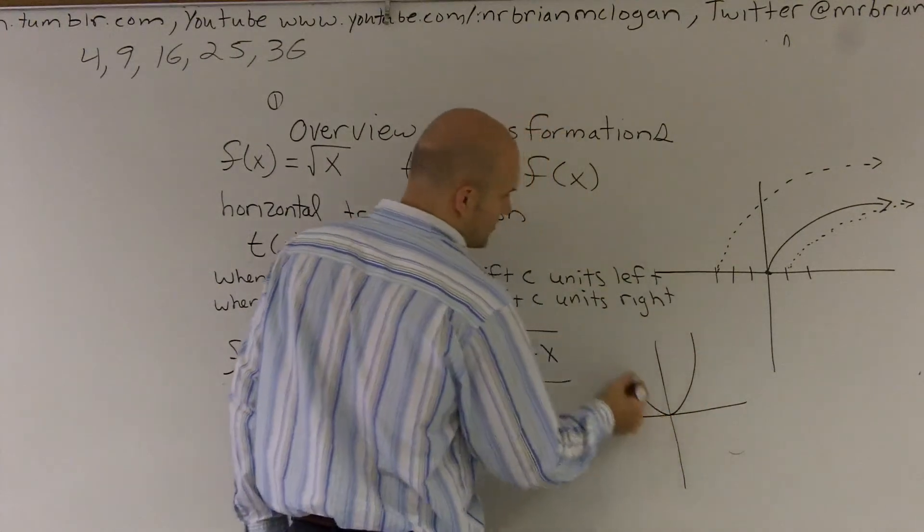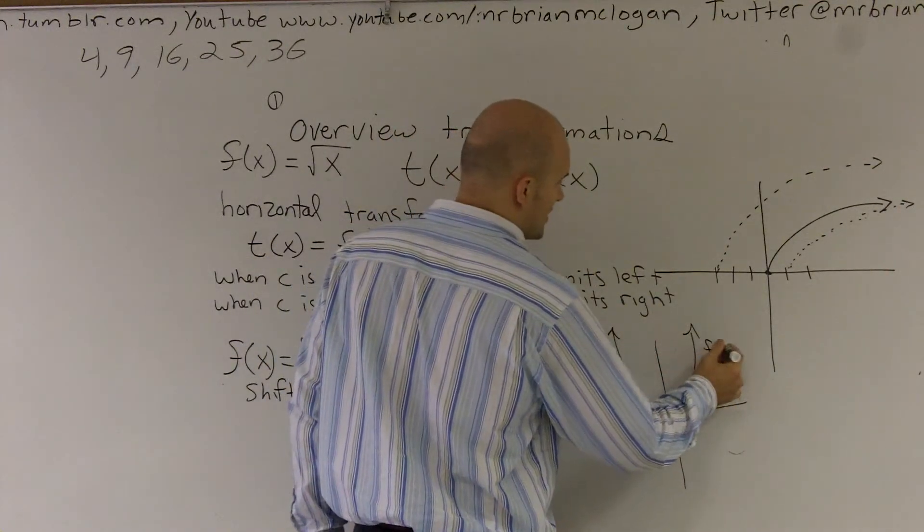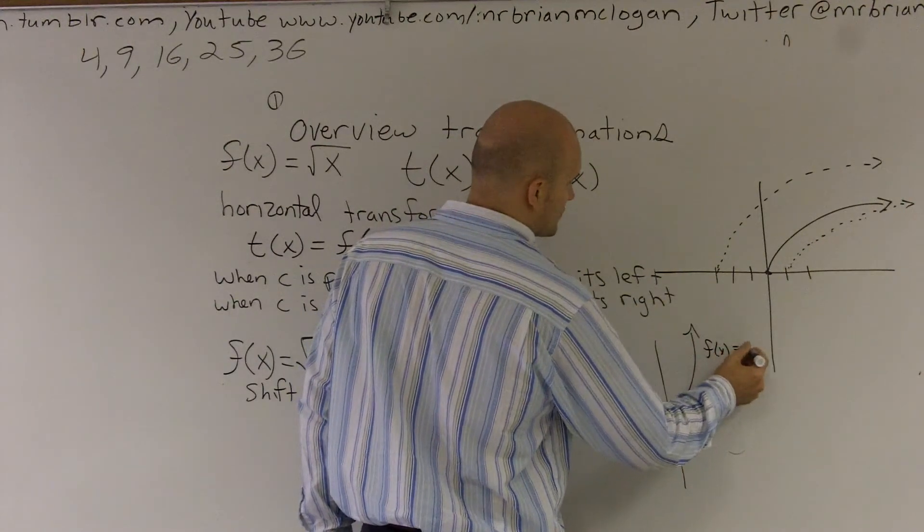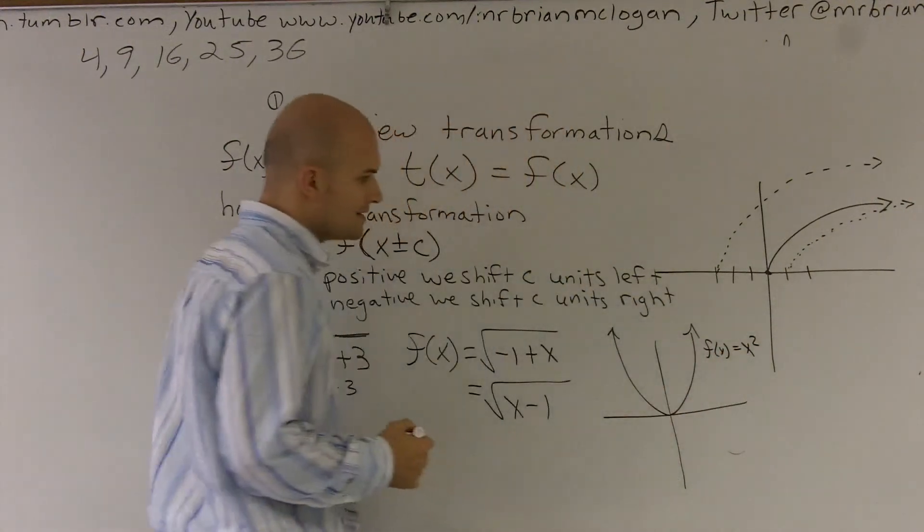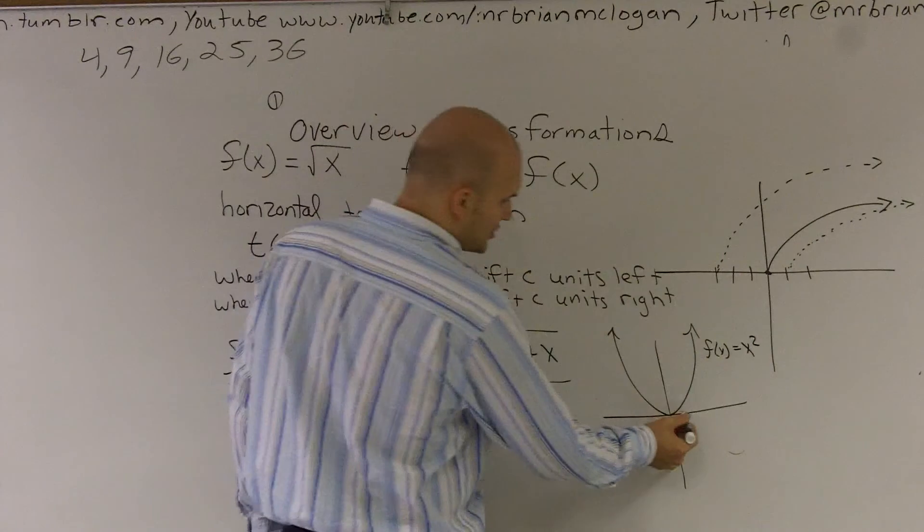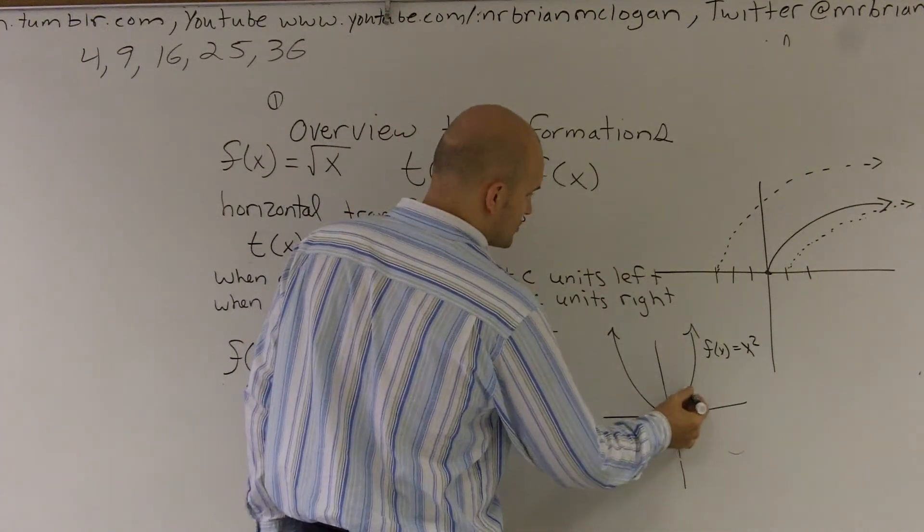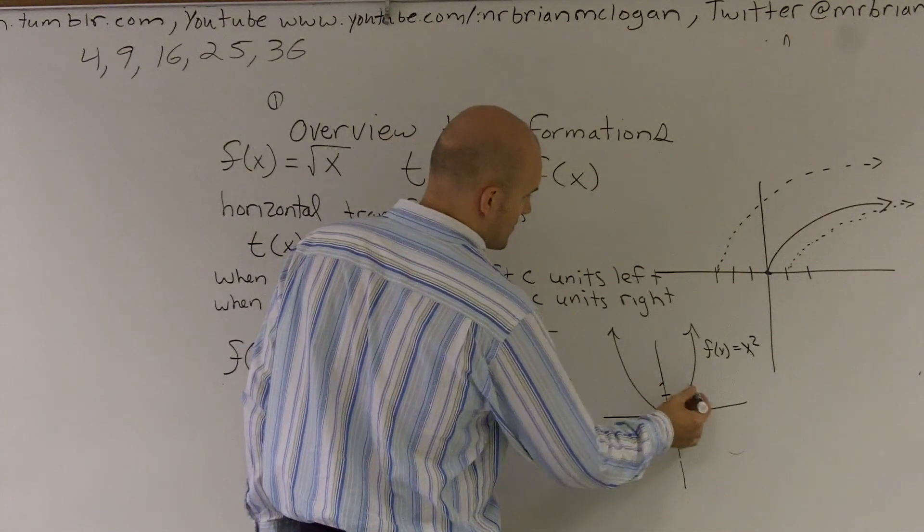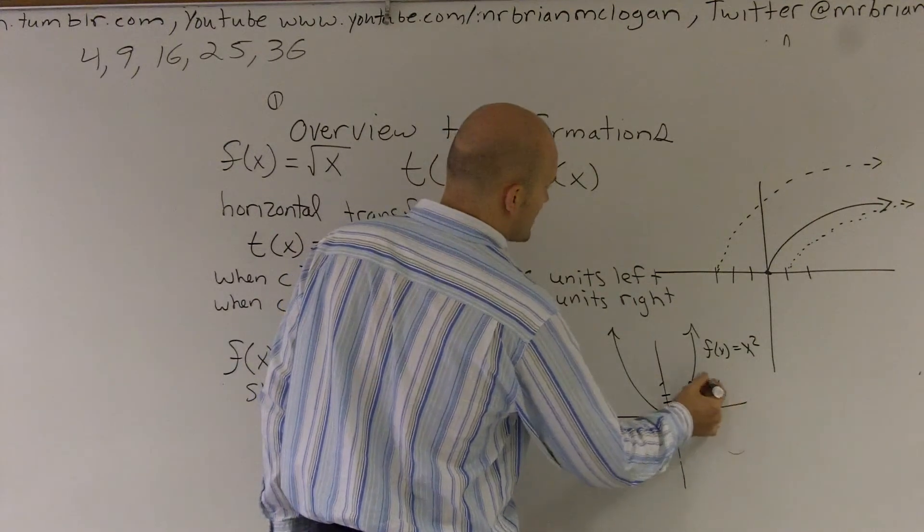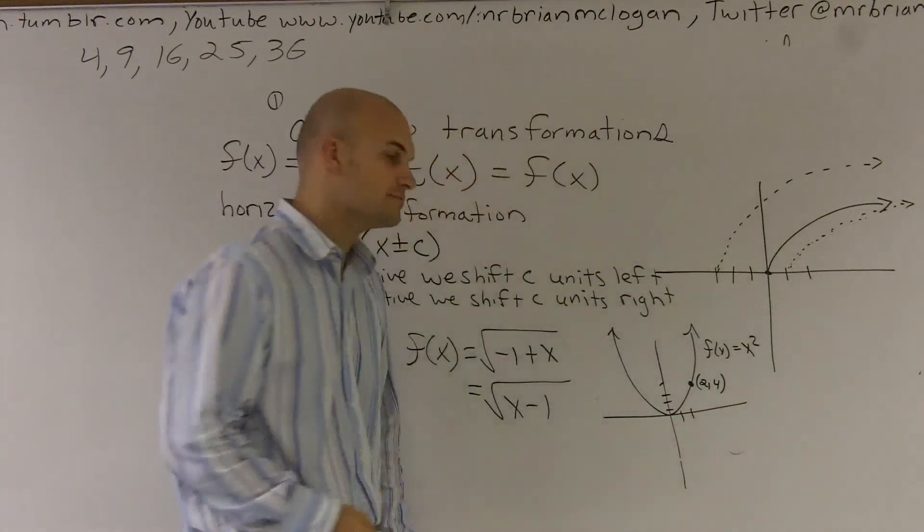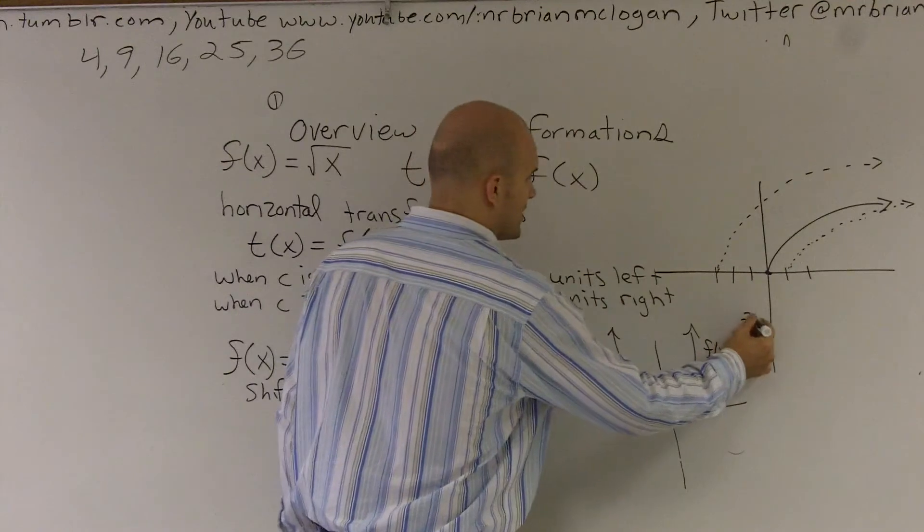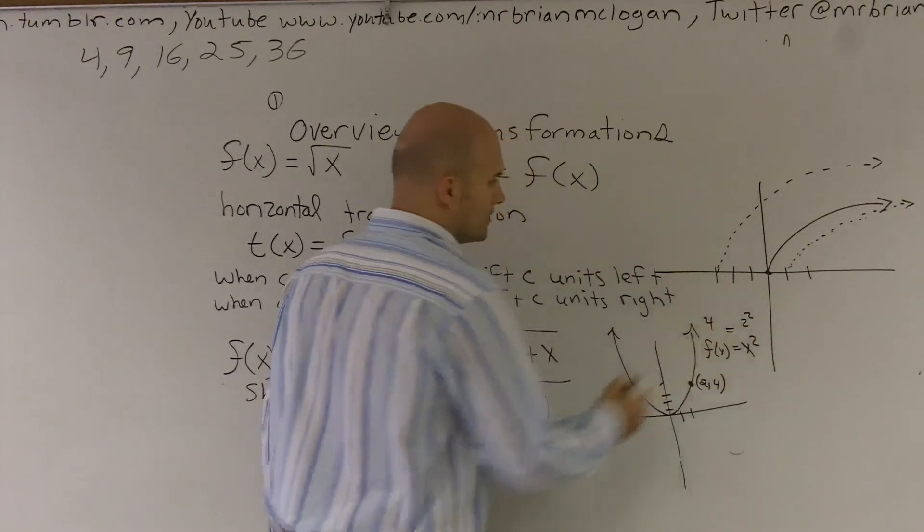If we use the function f(x) equals x squared, one thing you guys should know is the point (2, 4) is on the graph, right? Because 2 squared equals 4.